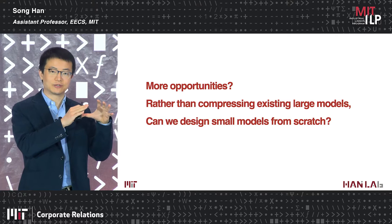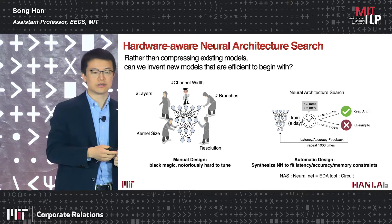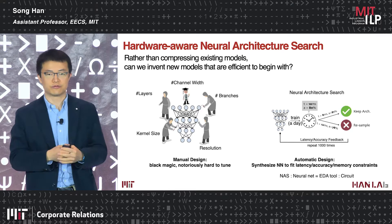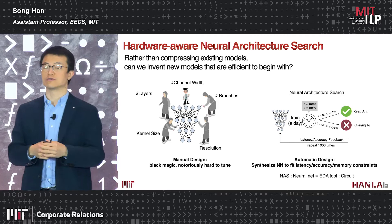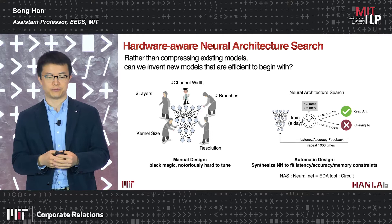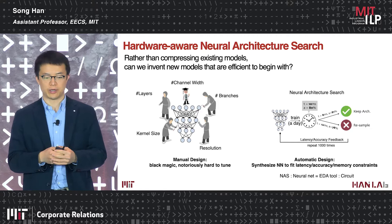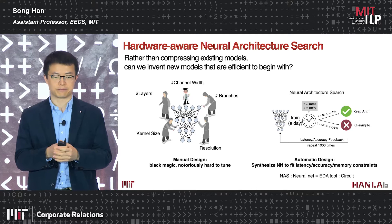Beyond compressing existing models, can we design small and compact models to begin with? This is our endeavor called hardware-aware neural architecture search — a brand new technique for edge AI. Previously, people relied on manual design to tune the number of layers, channels, branches, resolution, and kernel size to fit a particular hardware platform's memory constraint and target latency. This is notoriously hard to tune. We propose automatic design using hardware-aware AutoML to synthesize neural networks automatically given latency, accuracy, and memory constraints — like an EDA tool for neural network design.